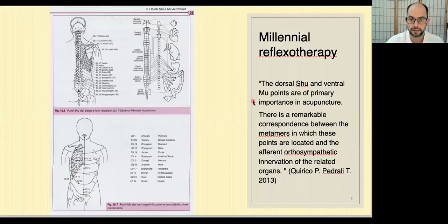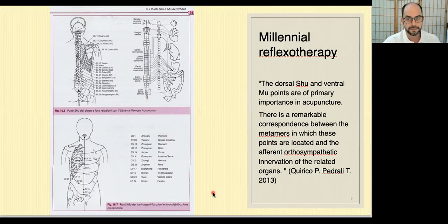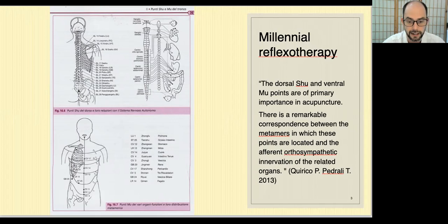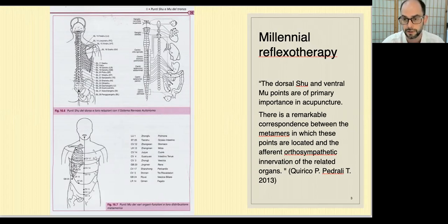This kind of use of the superficial fascia is really ancient. The same concept has been used by acupuncture, as we can see in the picture from the book of Quirico, and it has been used for 4,000 years. We can mention the back shu points and the anterior mu points of acupuncture that are in relationship with the paravertebral ganglia, and these ganglia are in relationship with internal organs — but not directly. They are most of all in relationship with the superficial fascia because they can manage the vascularization of the superficial fascia.